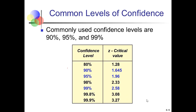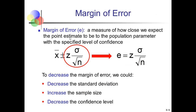The right-hand side of the equation—the critical value times the standard error—is called the margin of error. It measures how close we expect the point estimate to be to the population parameter given some level of confidence. We often write the margin of error as e. The confidence interval is two times the margin of error wide, because we subtract the margin of error to get the lower bound and add it to the mean to get the upper bound.